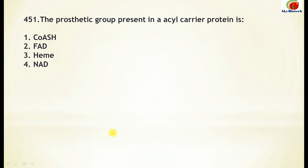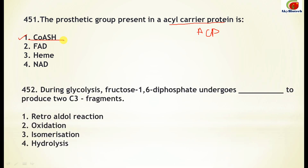Today we will discuss the following questions. Question 451: What is the prosthetic group present in acyl carrier protein (ACP)? The correct option is number one — it is Coenzyme A. Question 452: During glycolysis, fructose 1,6-diphosphate undergoes what reaction to produce two C3 fragments?